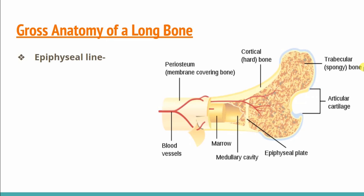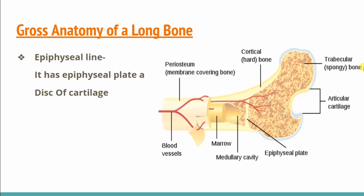The next part is the epiphyseal line. This is the region of the epiphyses — this is the epiphyseal plate. The epiphyseal line has epiphyseal plates. When someone is a growing child, they help the bone to grow. The number of bones does not increase as children grow — rather, the size of our bones grows slowly. The epiphyseal line and epiphyseal plate divide the bone and help it grow in size. It has an epiphyseal plate, a disc of cartilage, that helps the child grow taller or longer.